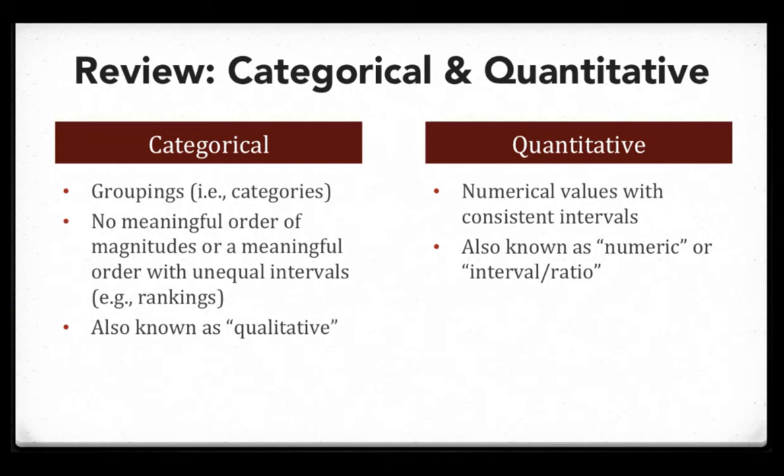These have no meaningful order of magnitudes or a meaningful order with unequal intervals, for example rankings. These are also known as qualitative variables. A quantitative variable has numerical values with consistent intervals. This is also known as numeric or interval ratio level.